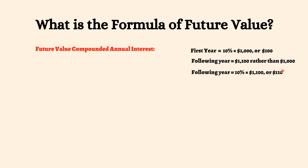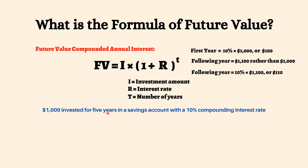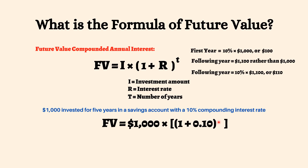The formula for the FV of an investment earning compounding interest is: FV equals I into 1 plus R to the power T, where I equals investment amount, R equals interest rate, and T equals number of years. Using the above example, the same $1,000 invested for 5 years in a savings account with a 10% compounding interest rate would have an FV of $1,000 into 1 plus 0.10, to the power 5, or $1,610.51.